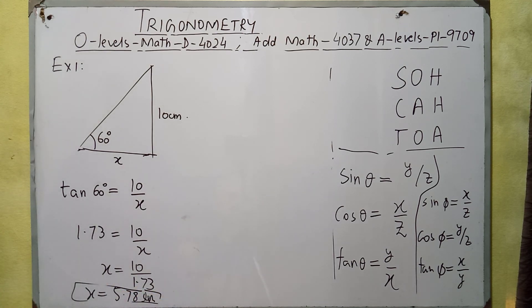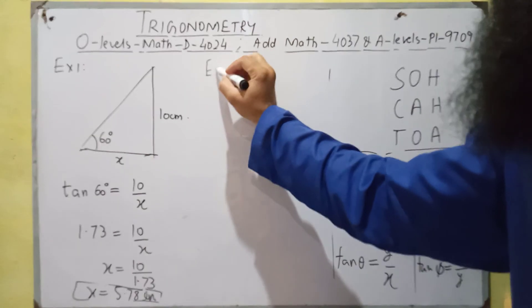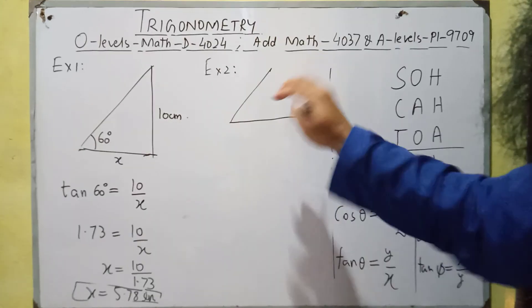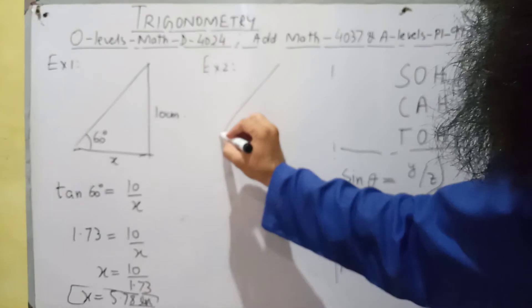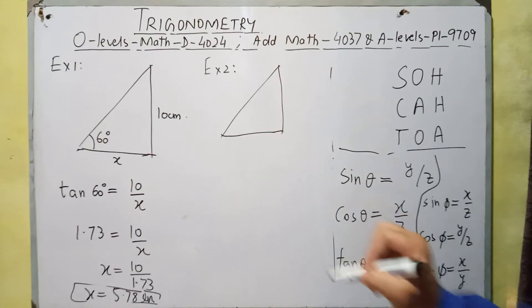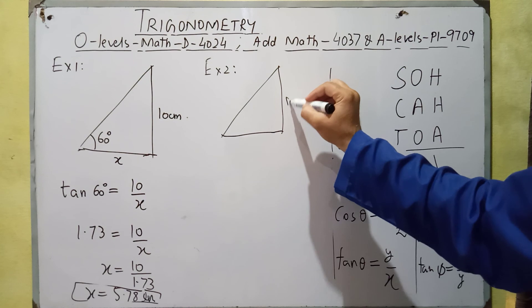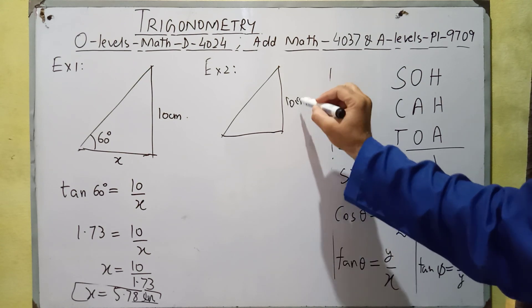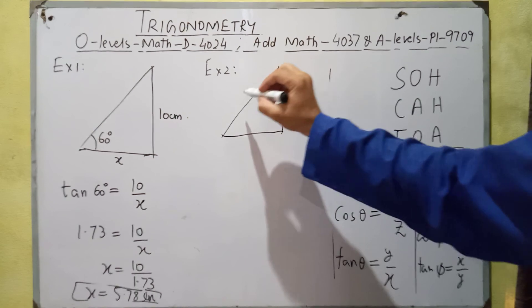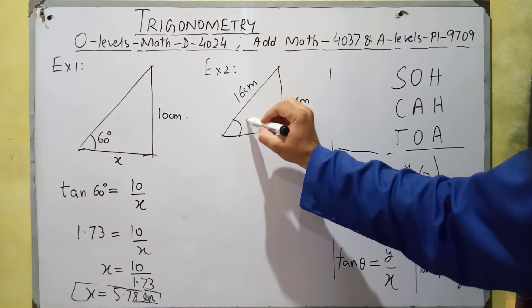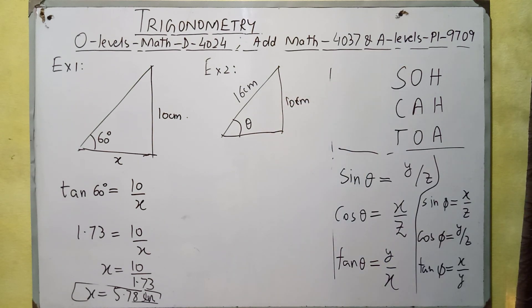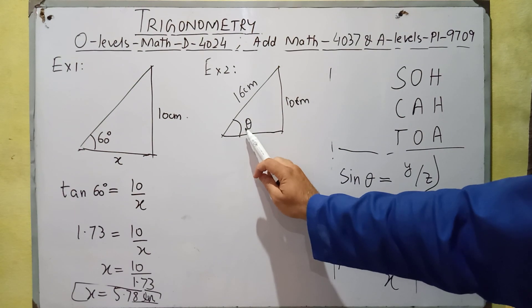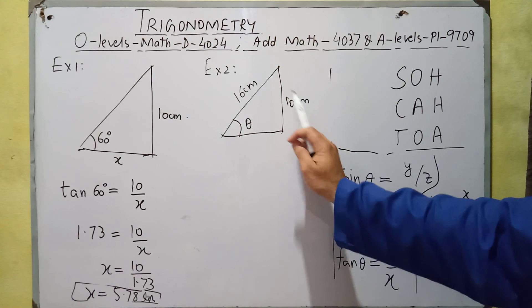This is one application of trigonometric ratios. Let's solve another example. Suppose we have a right angle triangle where one side is 10 cm and another side is 16 cm, and we are supposed to find the unknown angle. For this angle, we look at the side opposite to it and consider the relevant trigonometric ratio.